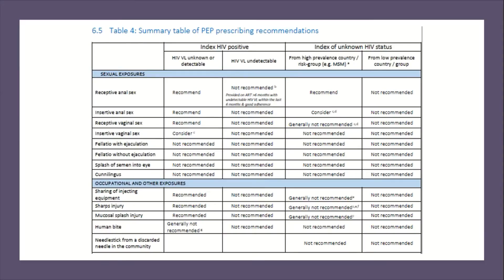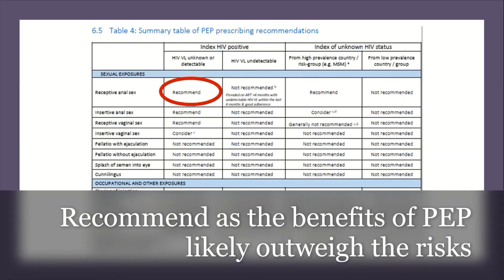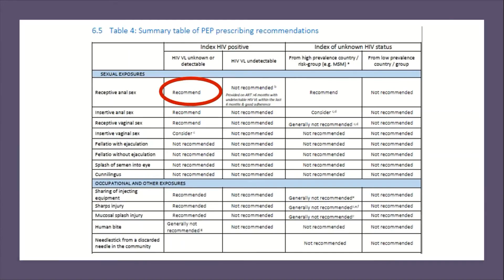There is a very useful summary table of PEP prescribing recommendations in the BASH guidelines. In this scenario, the BASH guidelines would recommend PEP be offered when there is receptive anal intercourse with someone who has HIV and a viral load that is unknown or detectable. PEP is recommended because the benefits are likely to outweigh the risks, so PEP should be given unless there is a clear reason not to.